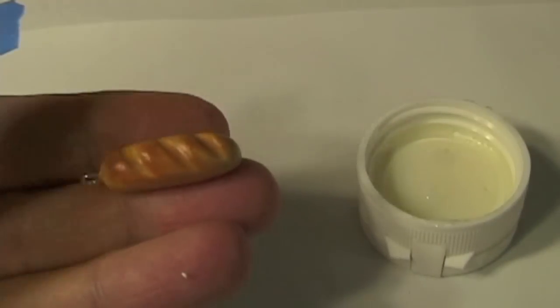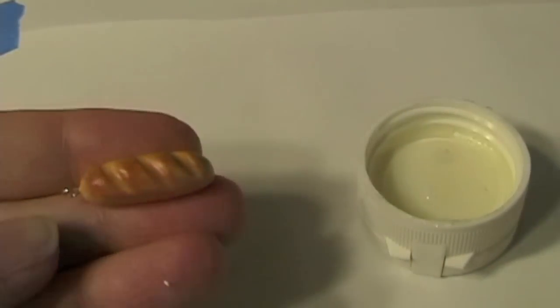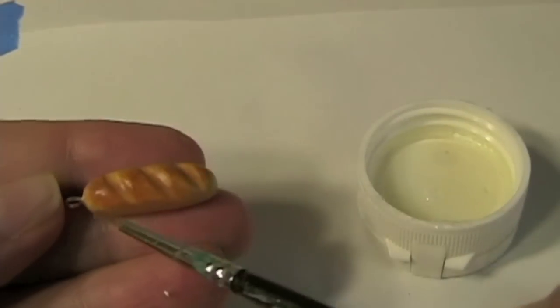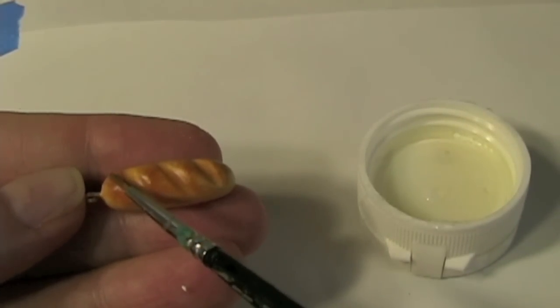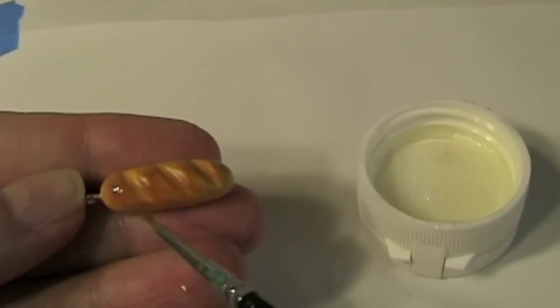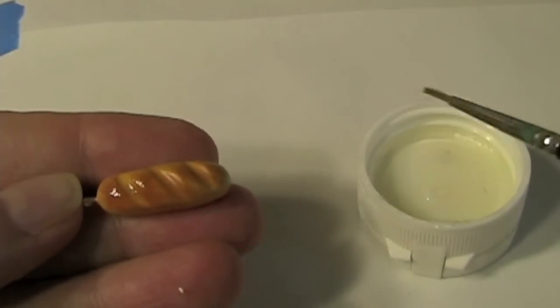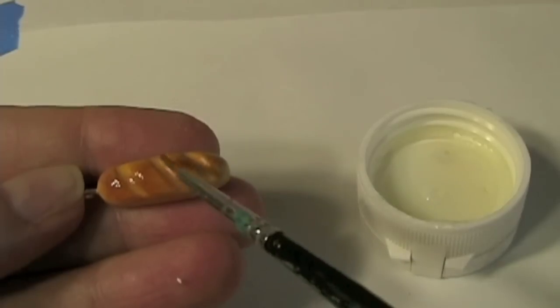Now I want to use the gloss clear coat. I'm just going to do a light brushing on the top of the bread. This is going to give that look as if it was drizzled in butter or oil.